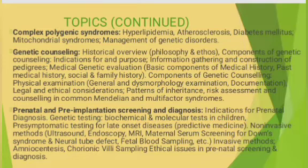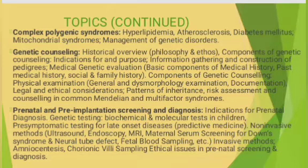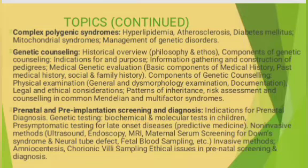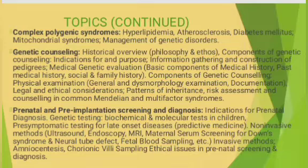The next major topic is genetic counseling, covering its components, indications and purpose, information gathering, construction of pedigrees, and medical genetic evaluation — including basic components of medical history, past medical history, and social and family history. It also covers the physical examination, including general and dysmorphology examination, documentation, and legal and ethical considerations, as well as patterns of inheritance, risk assessment, and counseling in common Mendelian and multifactorial syndromes.